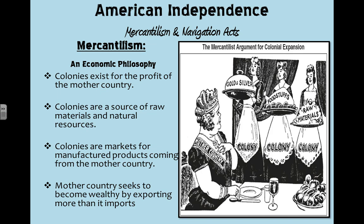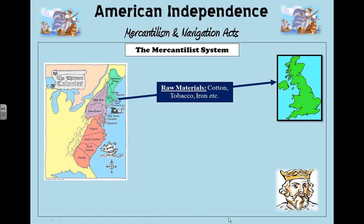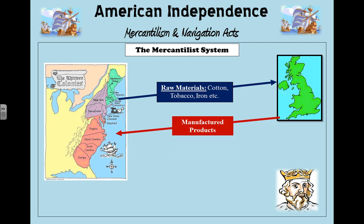Let's look at the mercantilist system a bit deeper. You have the 13 colonies on one side and Great Britain on the other. Raw materials like cotton, tobacco, and iron — things dug up, mined, or farmed — are sent over to Great Britain. In turn, Great Britain processes those products, creates manufactured goods, taxes them, and sends them back to the colonies to make money.